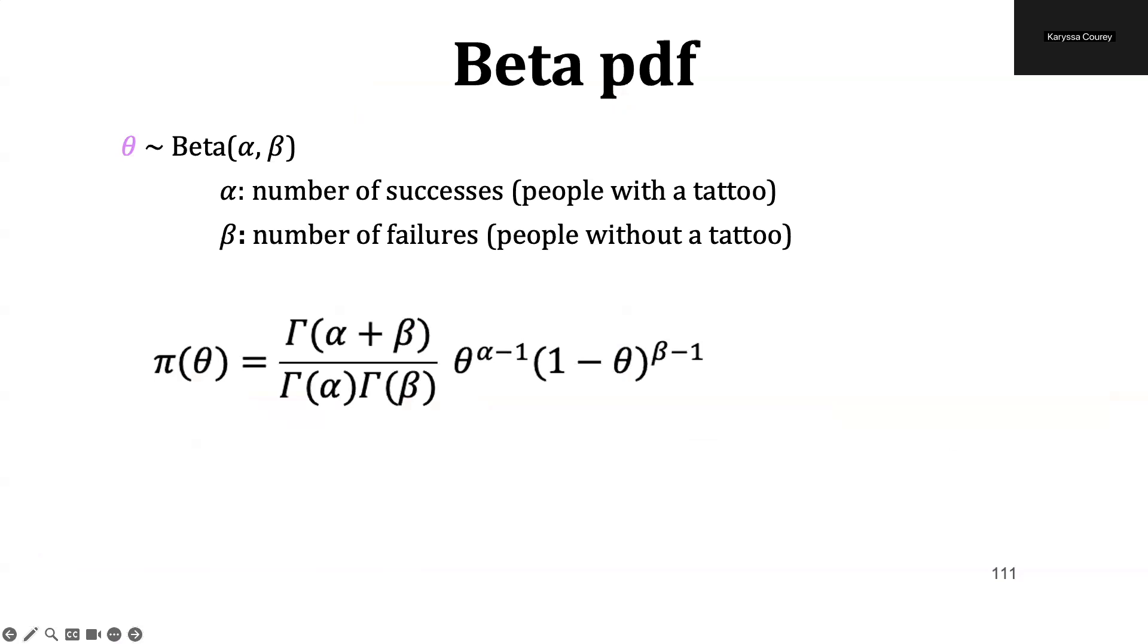So with a beta PDF, PDF stands for probability density function, we're representing theta, which is our population proportion of U.S. adults with a tattoo, the beta distribution with the hyperparameters alpha, comma, beta.